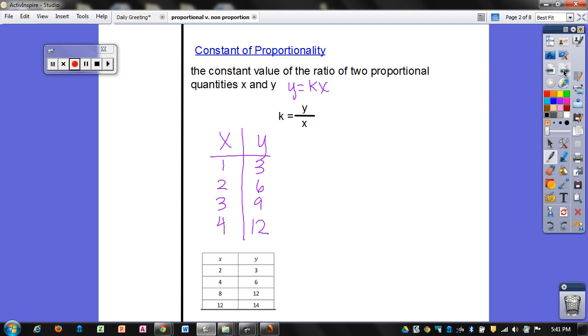So let's talk about the constant of proportionality. It's the constant value of the ratio of two proportional quantities, x and y. So you were given y equals kx. When you solve for k and have k isolated, you get this equation right here: k equals y divided by the x.